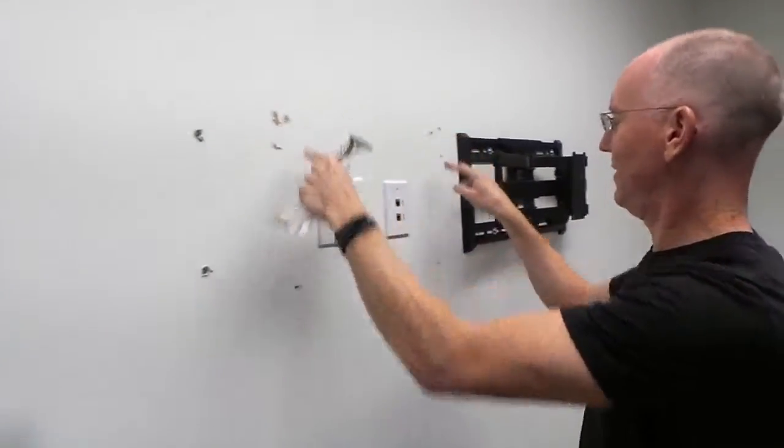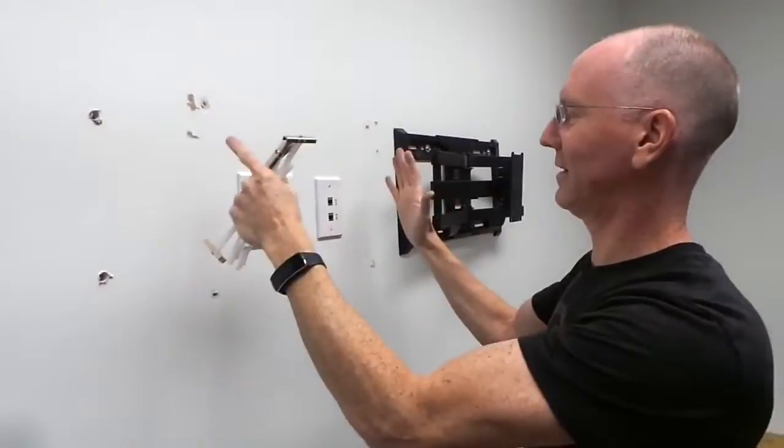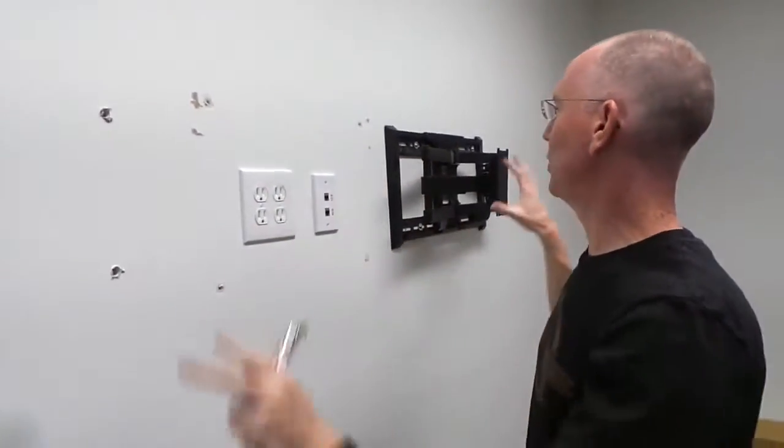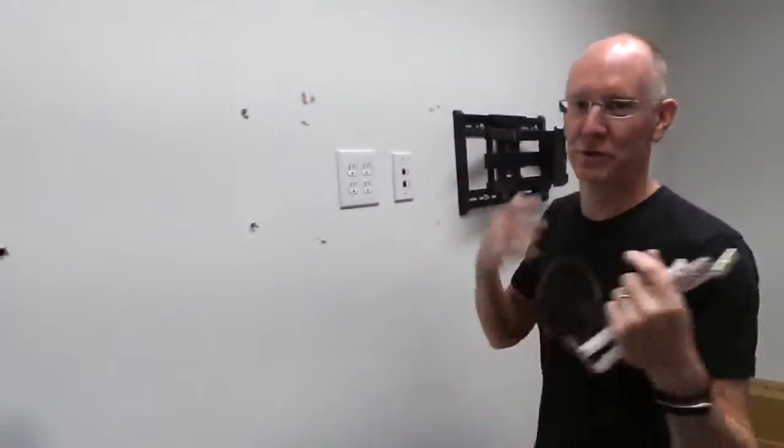You can see we had one TV on the wall before and it was on these four holes here. We had a mounting thing here. We pulled that down. We're putting two identical mounts for the two identical monitors.